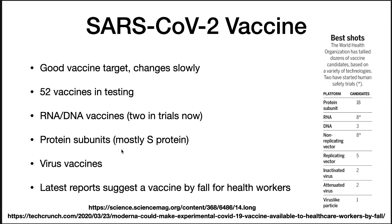Whole viral vaccines are also under development, so there's a whole slew of vaccines coming down in production. A potential advantage of RNA vaccines, if successful, is the ability to quickly ramp up production and create enough doses to protect the general public. Moderna, the maker of an RNA vaccine undergoing clinical trials, hopes to make it available to healthcare workers by fall, if the vaccine appears effective.